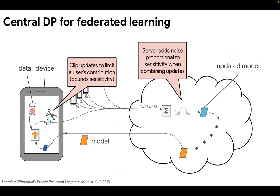Specifically, in what we call the central DP model, you will have each client clip their updates before sending to the server, and then add privacy-preserving noise on the server to prevent the model from overfitting to any particular user's contribution. This ensures that the trained model and the model iterates do not contain too much information about any particular client.